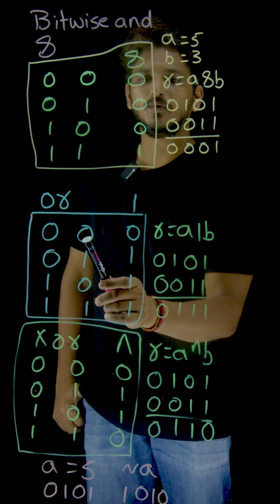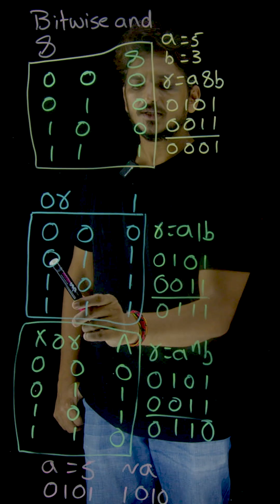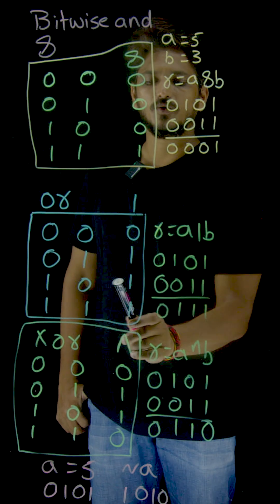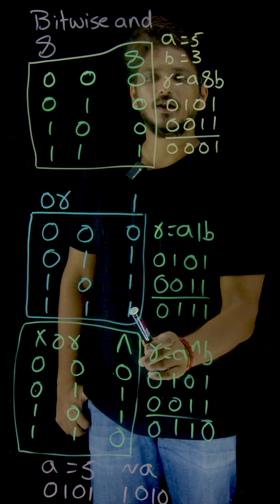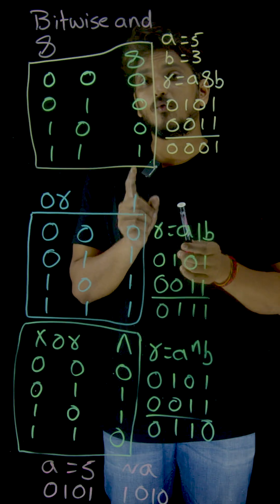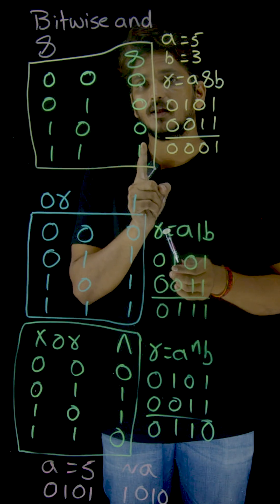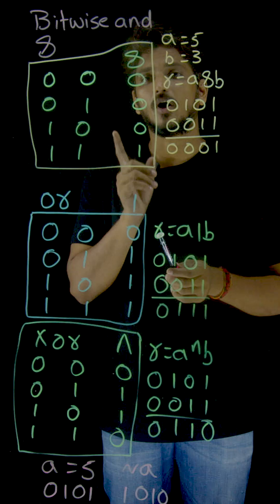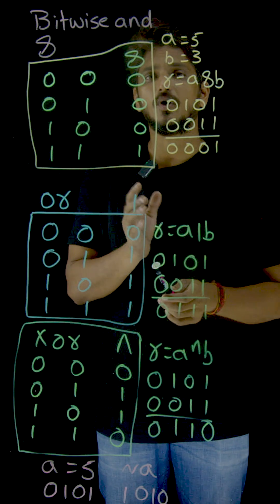0 OR 0 equals 0. 0 OR 1 equals 1. 1 OR 0 equals 1. 1 OR 1 equals 1. So if at least one 1 is there, then your OR operator is going to provide you output 1.